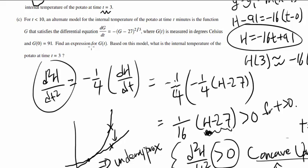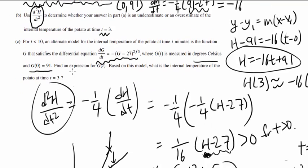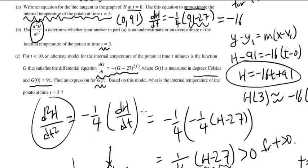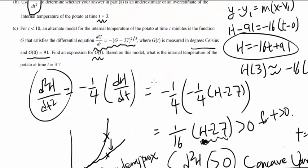How about for c? For time greater than 0, an alternate model for the internal temperature of the potato is the function g that satisfies this differential equation, where g(t) is measured in degrees Celsius and g(0) is 91. Realize g(0) and h(0) both agree, which looks nice. Find an expression for g(t), that's solving the differential equation. What do you have? dg/dt is negative (g minus 27) to the 2/3.